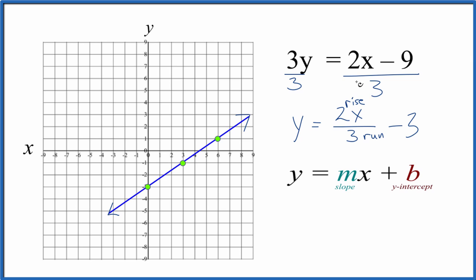You can also use a table of values to graph this equation. If you need help, there's a link at the end of this video on how to do that. This is Dr. B graphing 3y equals 2x minus 9. Thanks for watching.